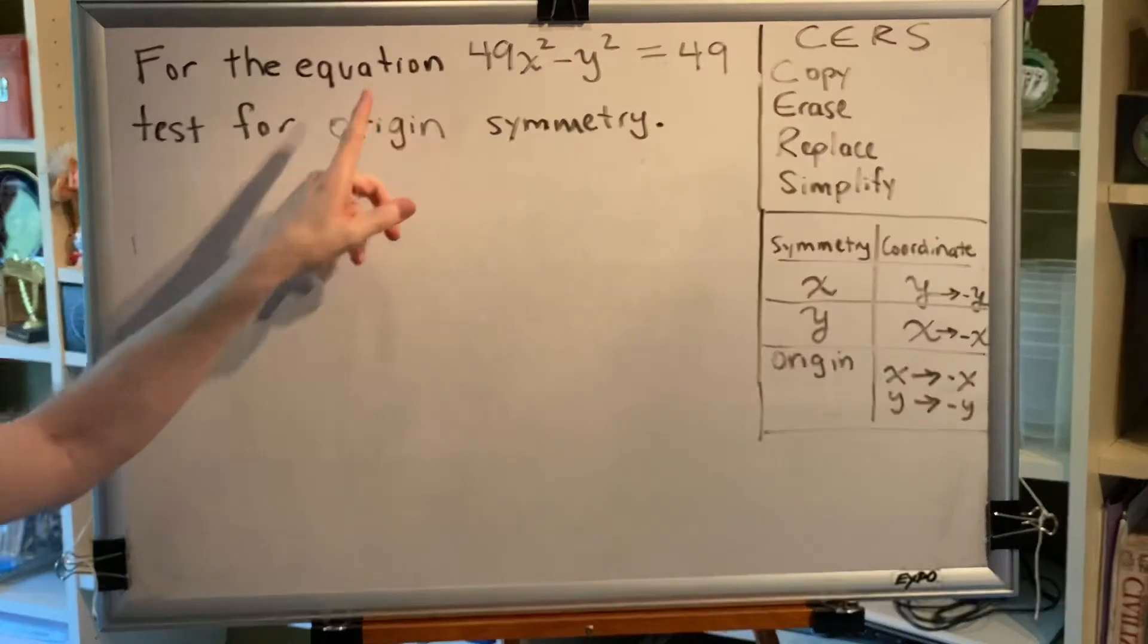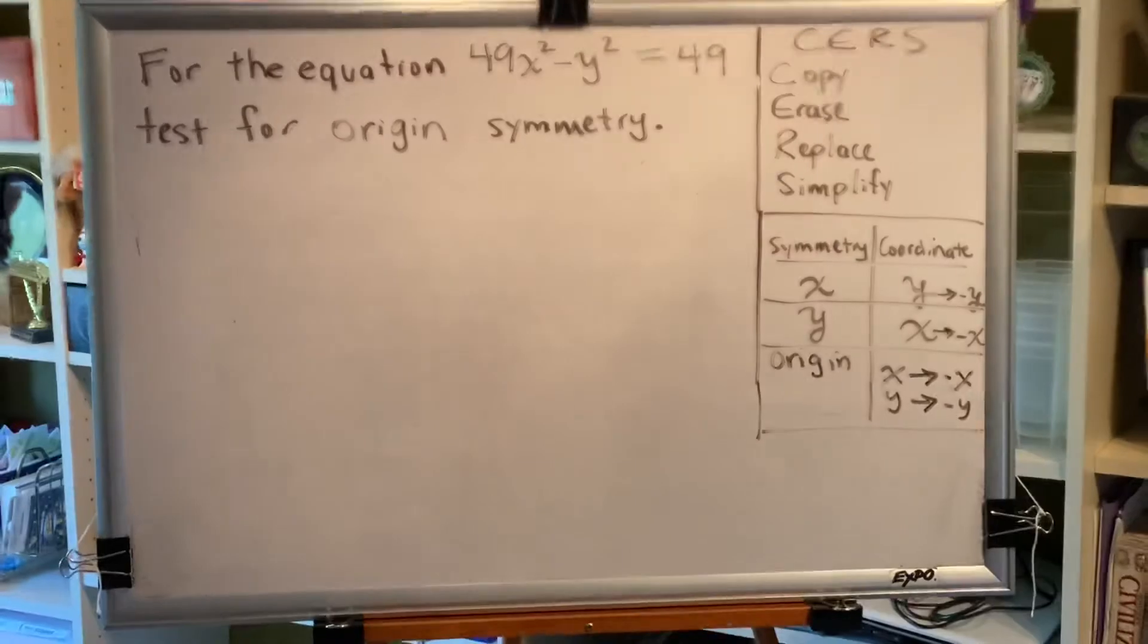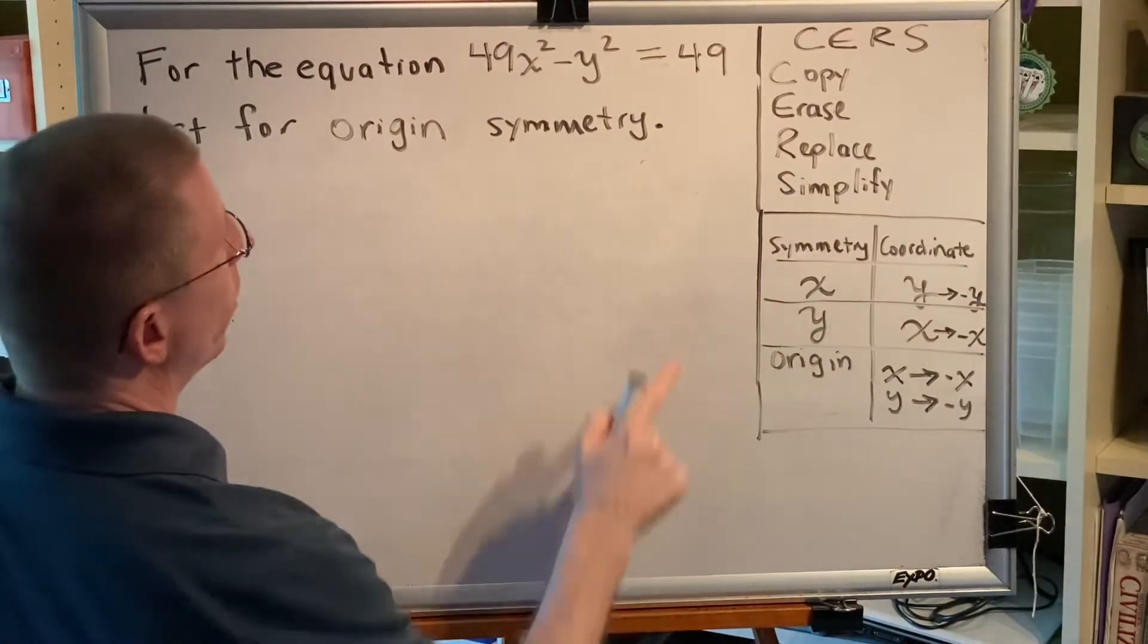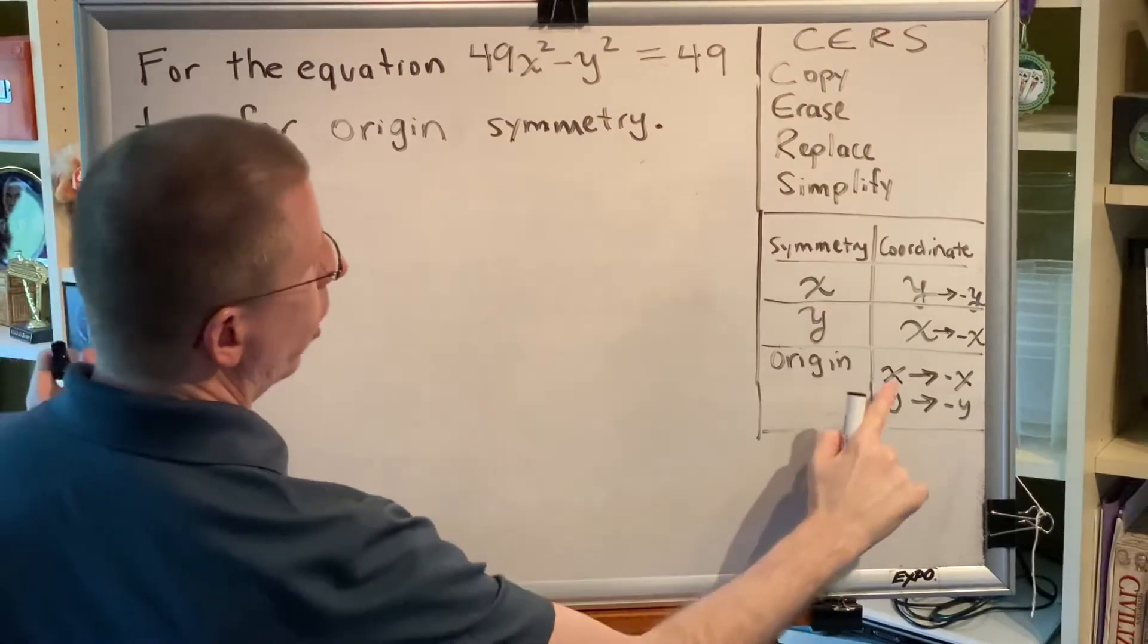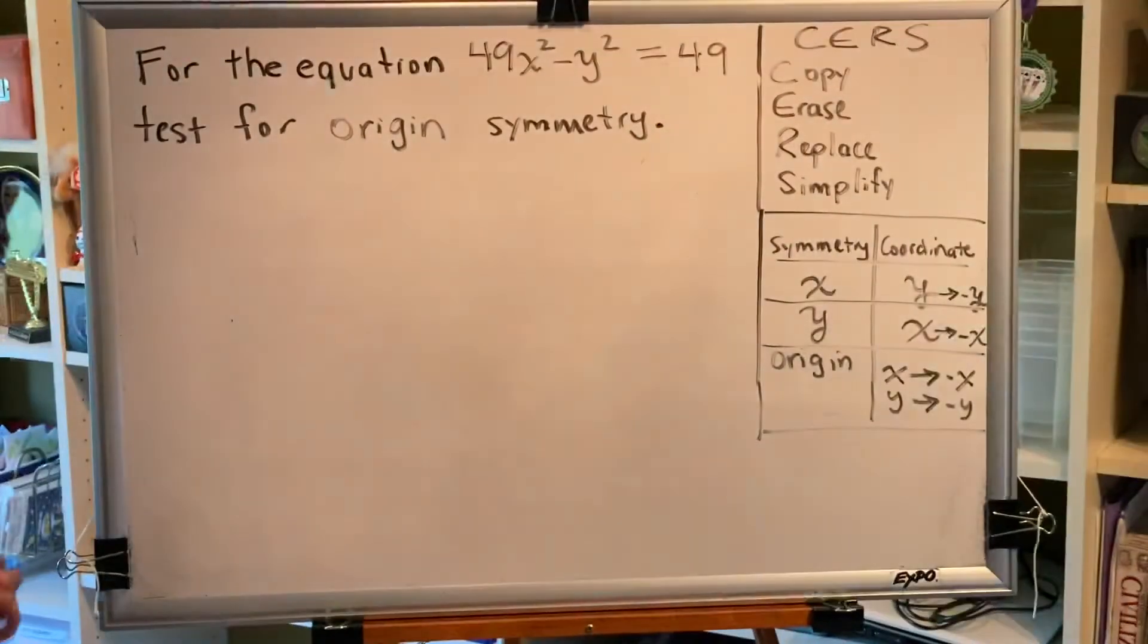We're given an equation and we're told to test for symmetry. So we need to use the SIRS method: copy, erase, replace, simplify. And because we're testing for origin symmetry, when we erase and replace, we're going to erase every x and every y and replace them with a negative x and a negative y, respectively.